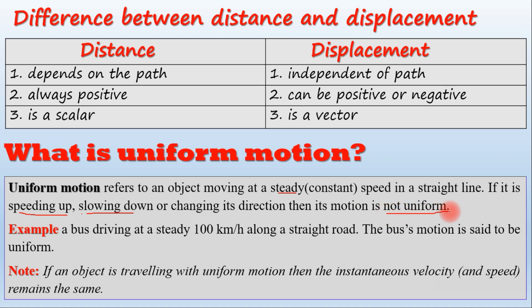Uniform motion means moving at a steady or constant speed in a straight line — for example, driving at a steady 100 km per hour along a straight road at constant speed.